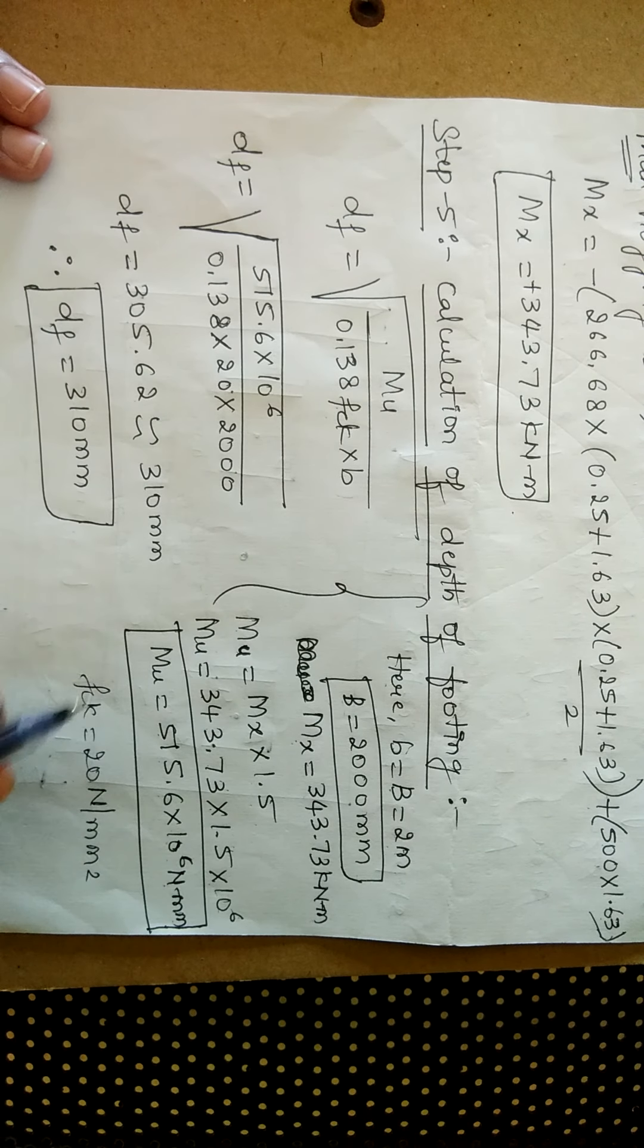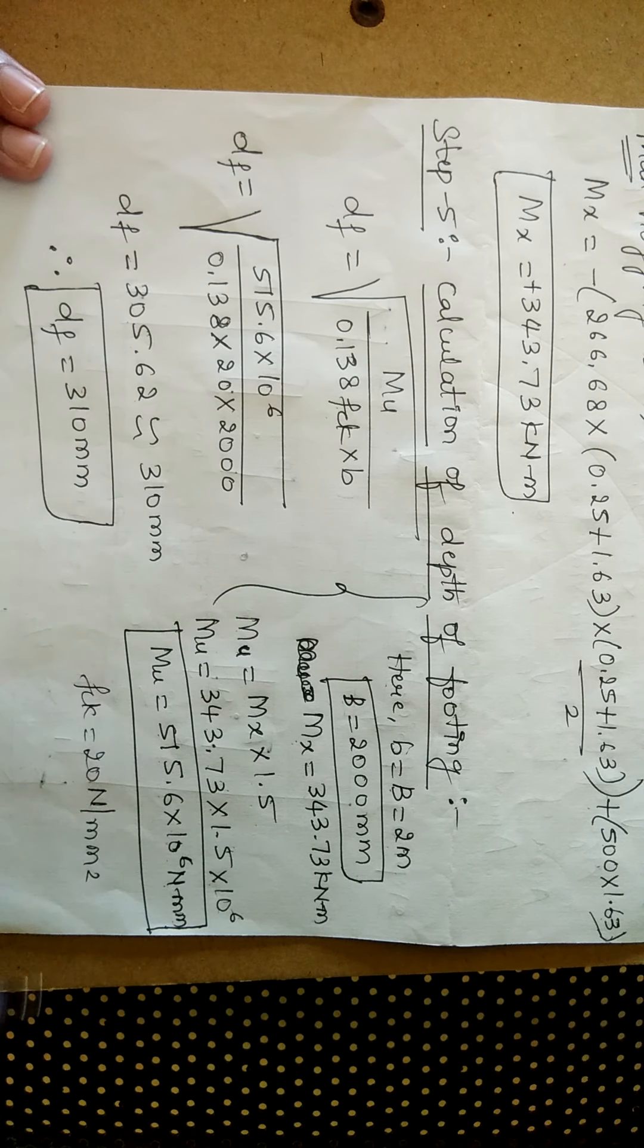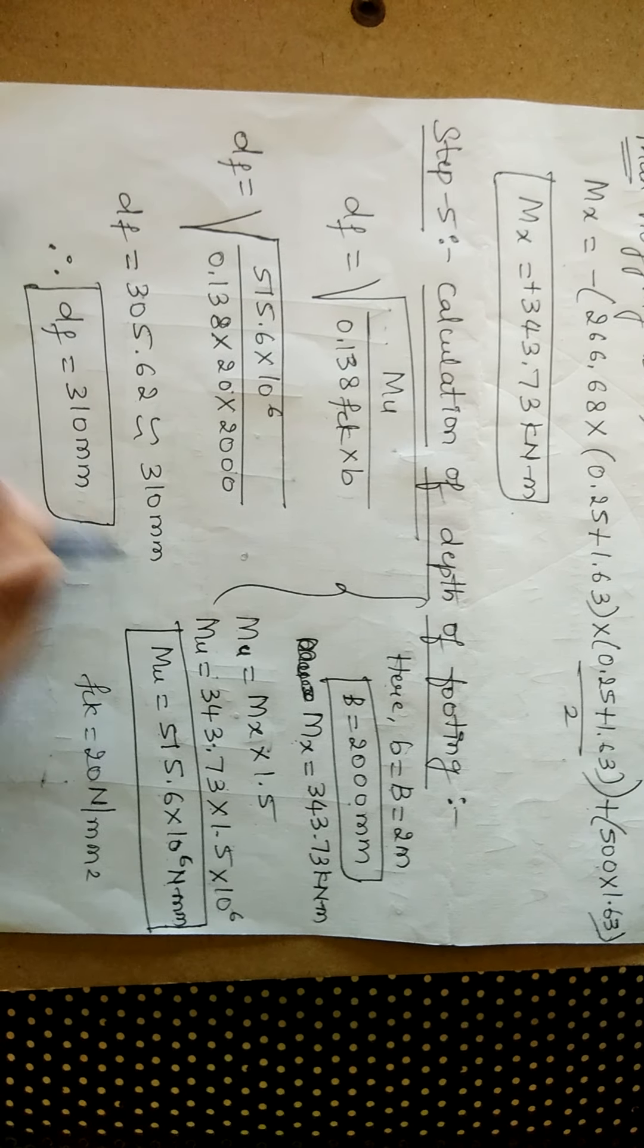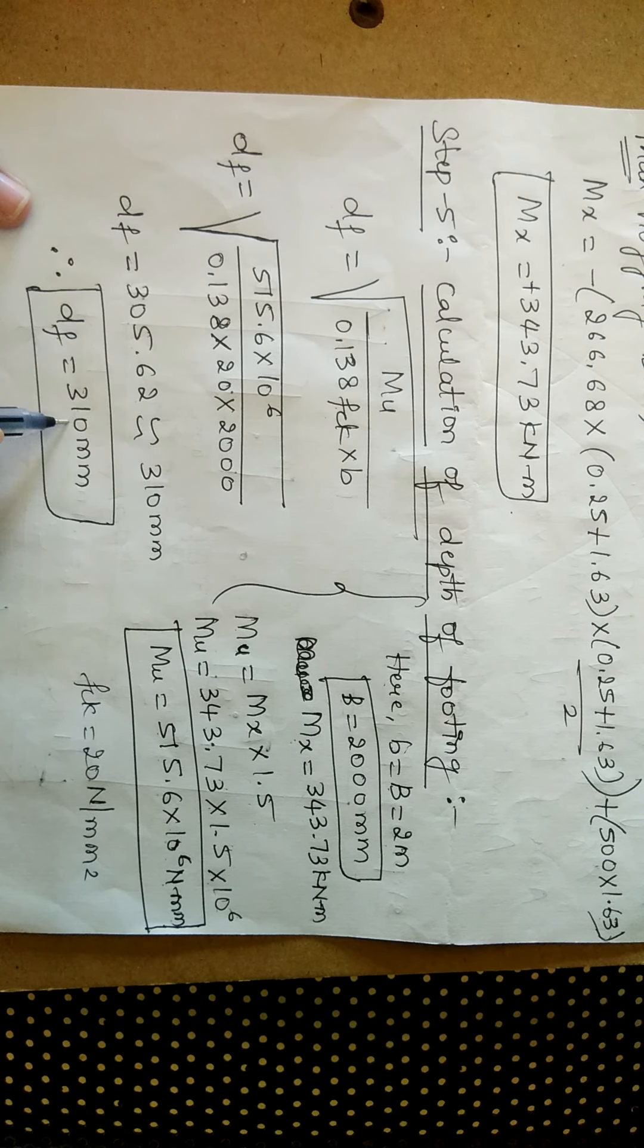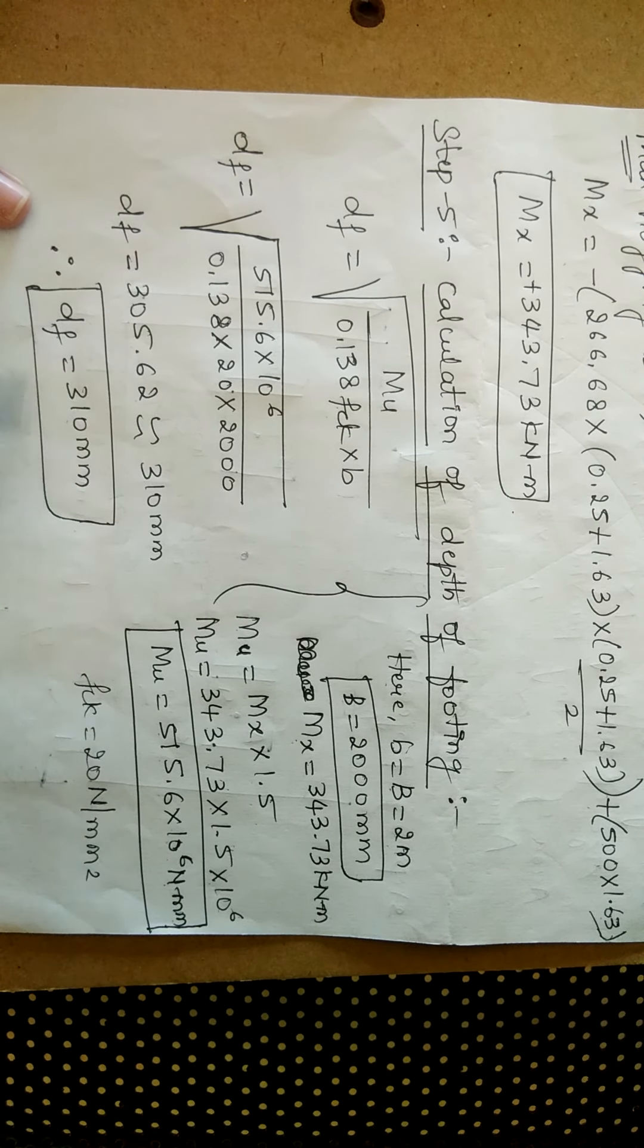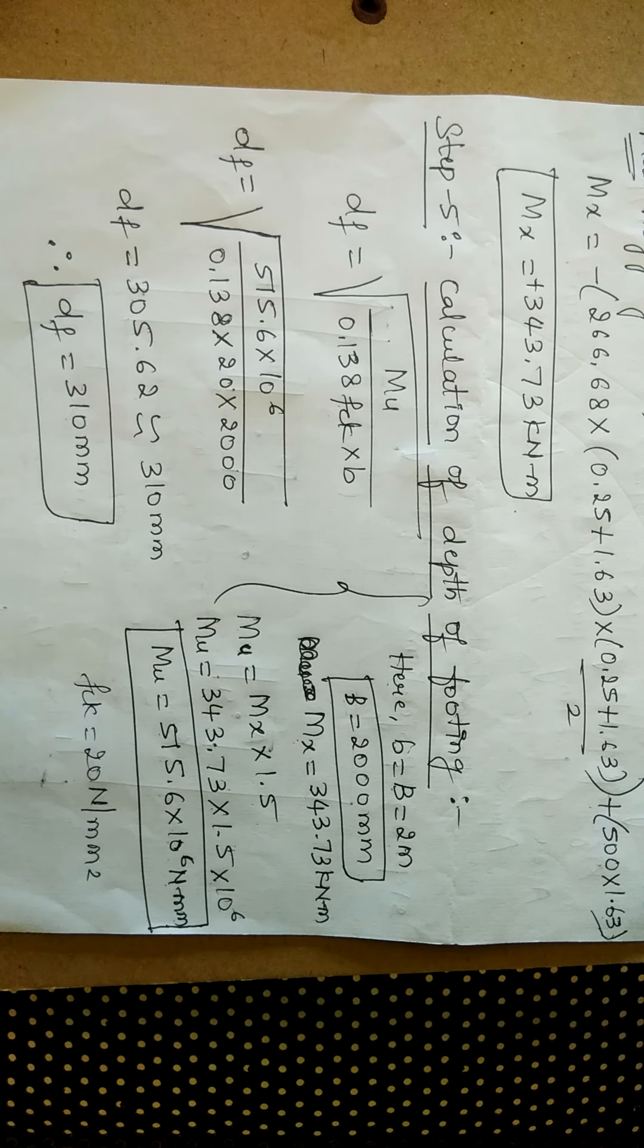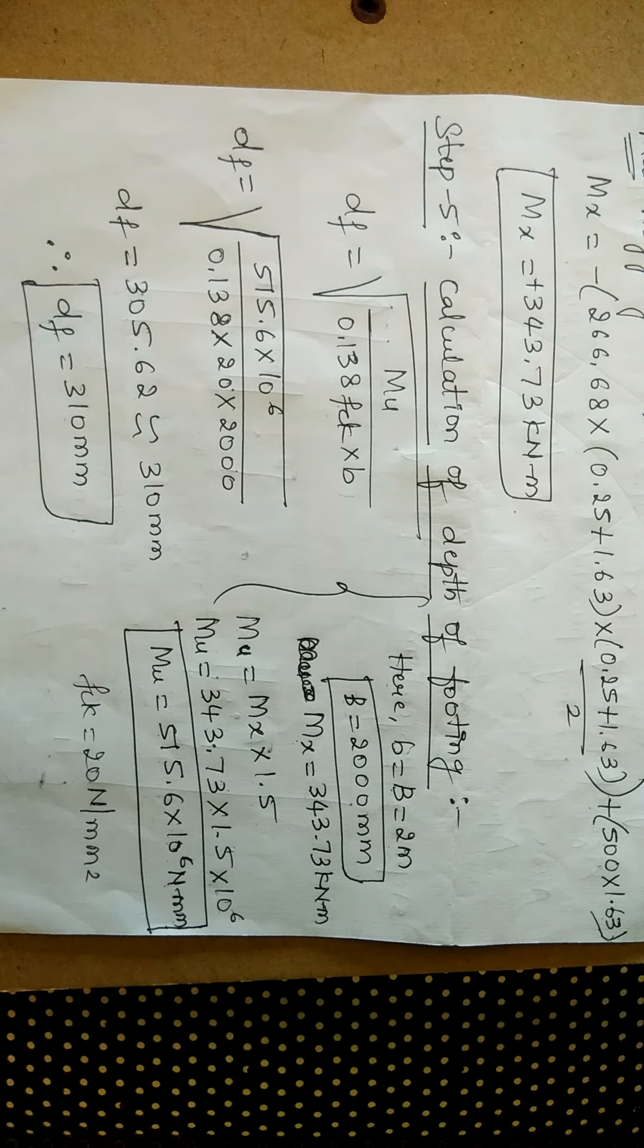If you want, you round it off to the next digit. I am rounding this value to the next digit, I am rounding it to 310 mm. So therefore, the value of df is 310 mm. So this value represents the depth of footing. That's all. So this completes step 5.